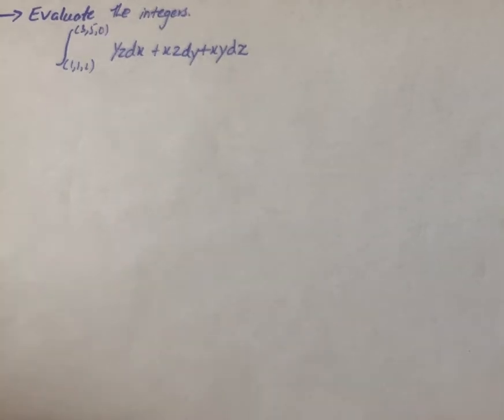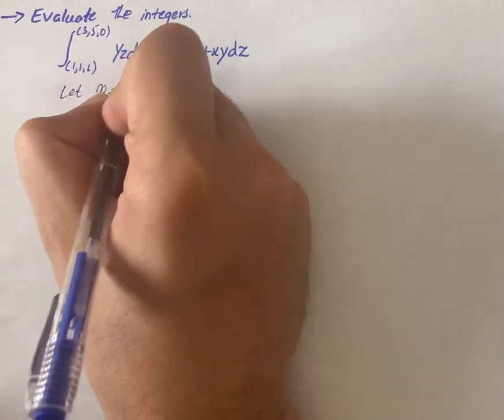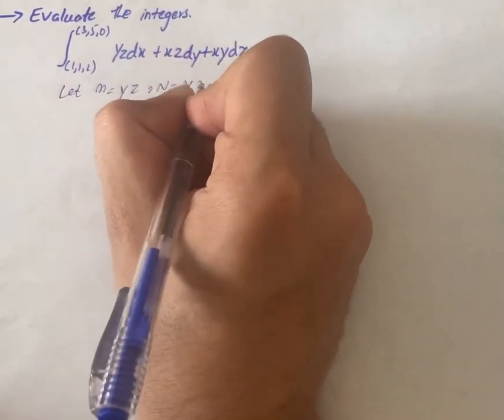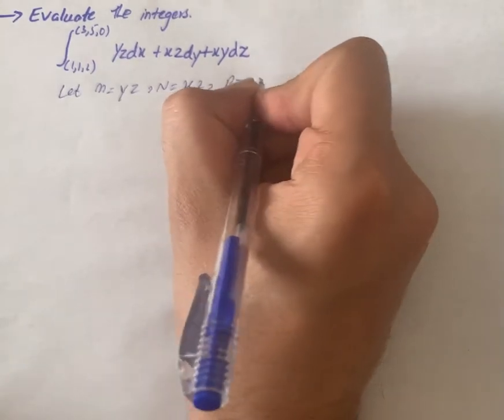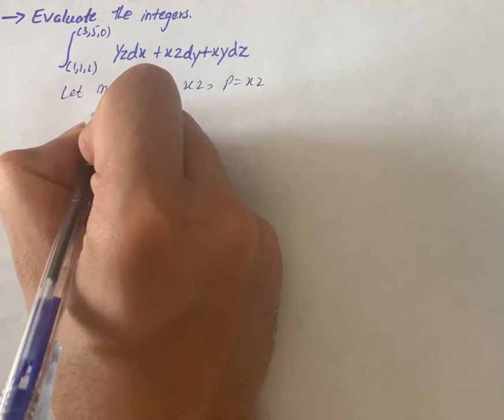The question says evaluate the integral. So first of all we will let m equal to yz and n equal to xz and p equal to xy. So we have p is equal to